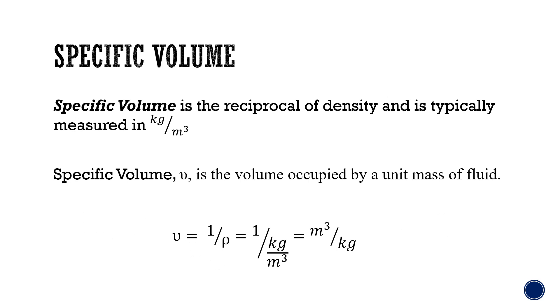Specific volume is the reciprocal of density. The specific volume, which is the Greek symbol epsilon, the formula to calculate specific volume is one over density, which is meters cubed over kilograms.